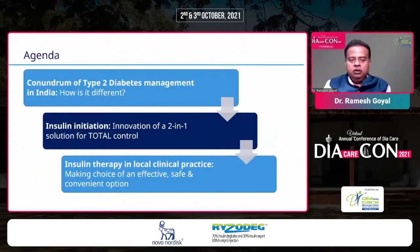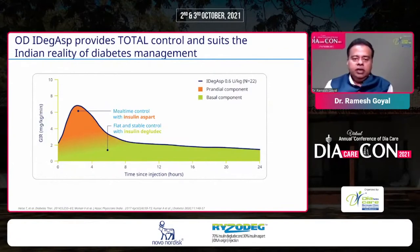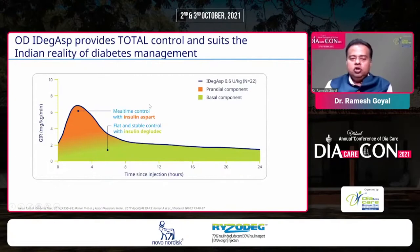Moving to the second point on my agenda: insulin initiation and innovation — a two-in-one solution for total control. I will discuss once-daily IDegAsp (Ryzodeg), which provides total control and suits the Indian reality of diabetes management. The insulin aspart portion of Ryzodeg takes care of mealtime control of glycemic surge, while the insulin degludec part delivers a flat and stable glycemic profile over 24 hours.